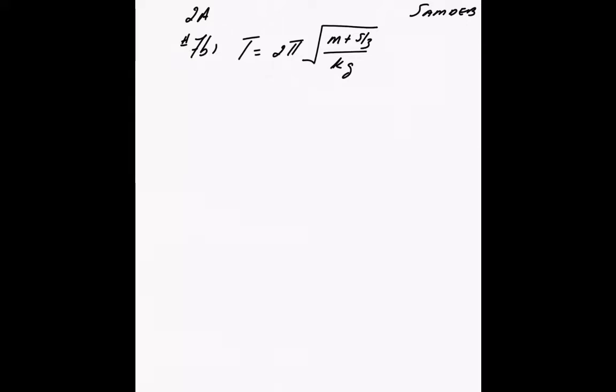Worksheet 2a, question 7b. t equals 2 pi root m plus s over 3 divided by kg. This time we'll leave the radical sign.